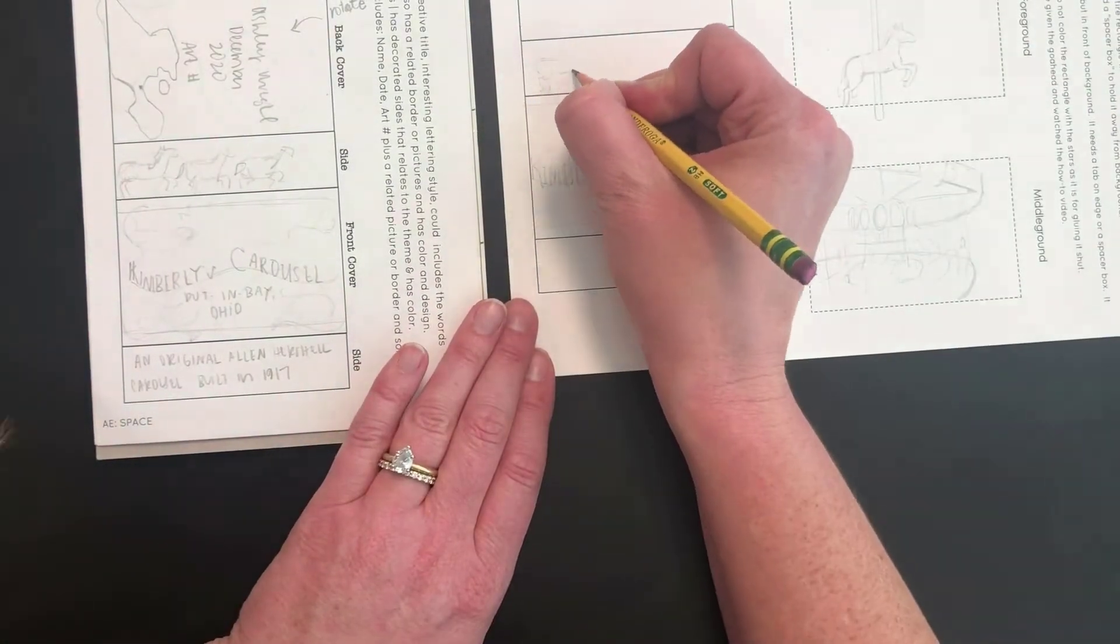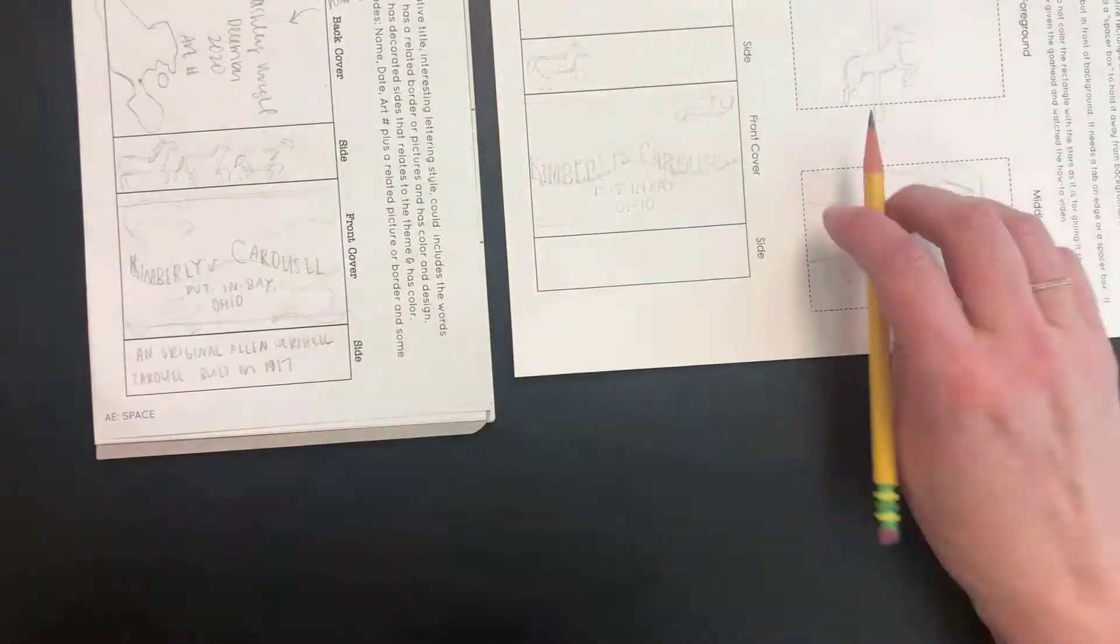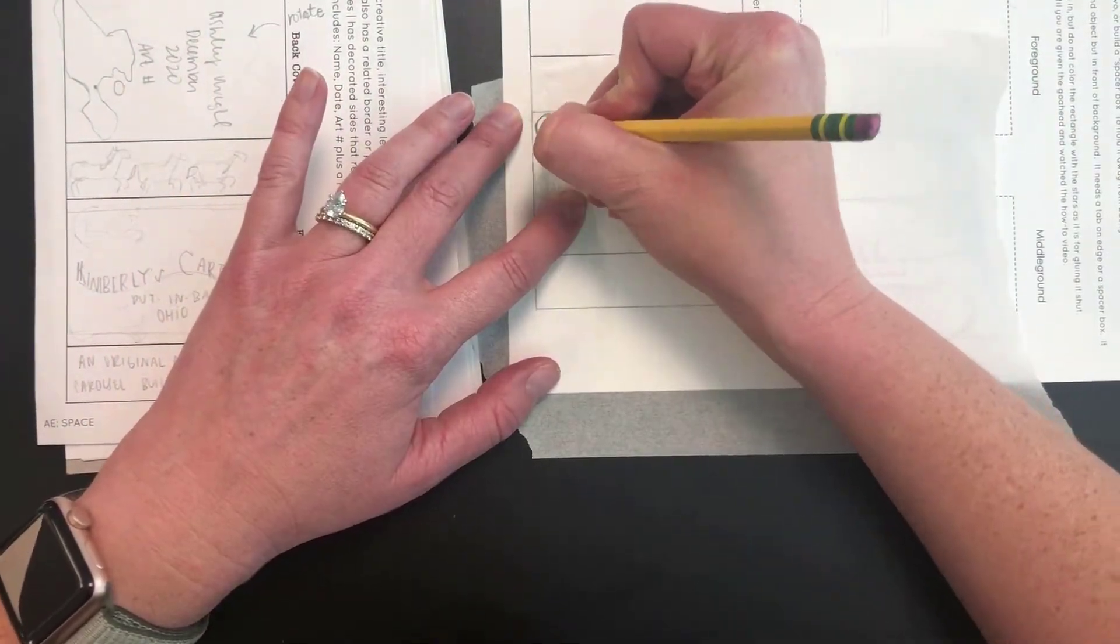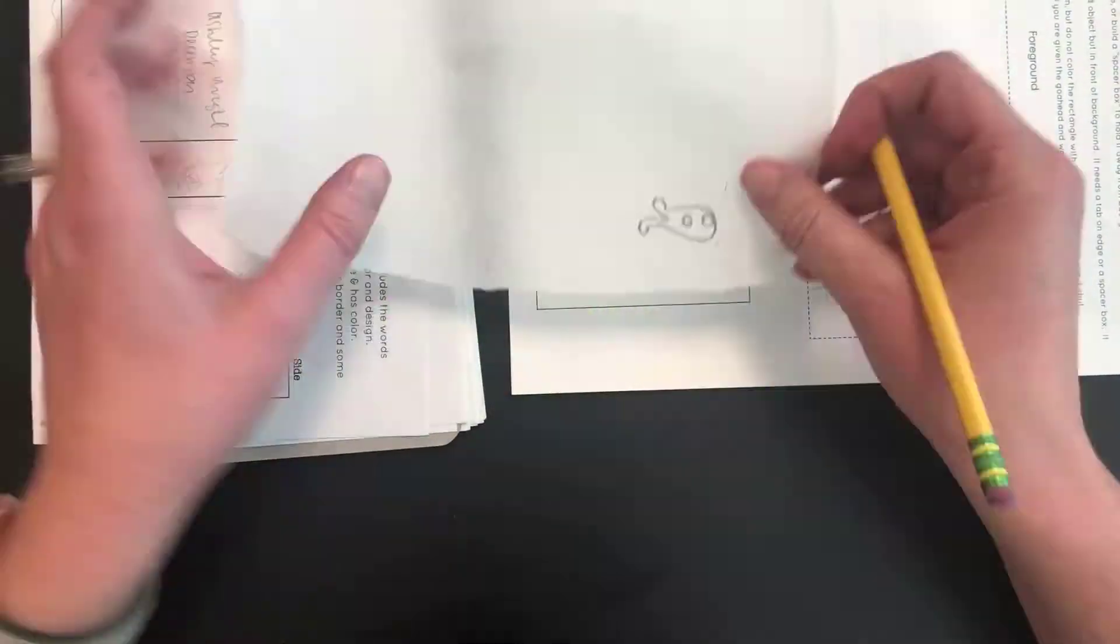For the sides, you need to have them decorated with something that relates to the theme. I'm using tracing paper here to trace, flip, and transfer a design that I want repeated multiple times.